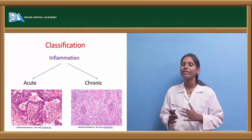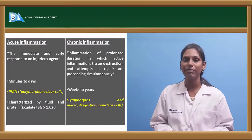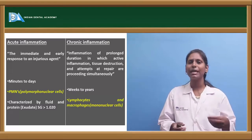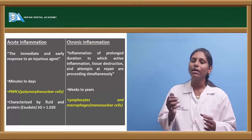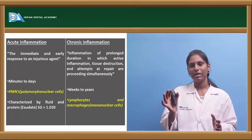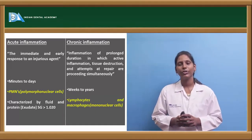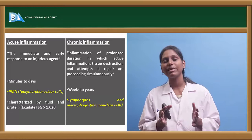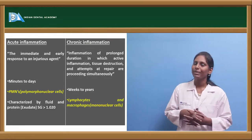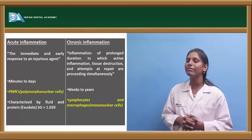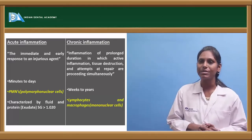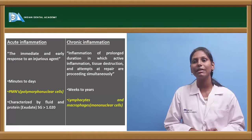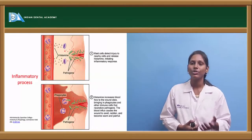Inflammation is classified into two types: acute inflammation and chronic inflammation. Acute inflammation is an immediate or early response to an injurious agent, usually lasting from four minutes to days. The main cells seen in acute inflammation are polymorphonuclear cells, characterized by fluid and protein exudate with specific gravity greater than 1.020. Chronic inflammation is of prolonged duration involving active inflammation, tissue destruction, and attempts at repair simultaneously, lasting from weeks to years, with lymphocytes and macrophages (mononuclear cells) being the predominant cells.